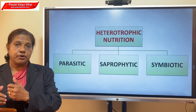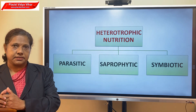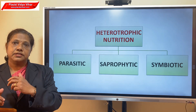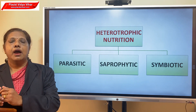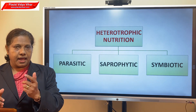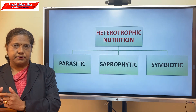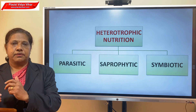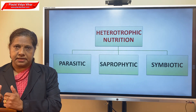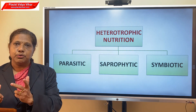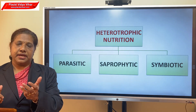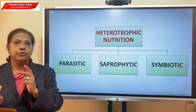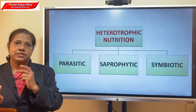Parasites are small animals or plants that live on or inside the body of other organisms. For example, lice that live in our hair, bed bugs, mosquitoes, leeches, and worms like roundworms and tapeworms that live in our intestines — these are all different types of parasites. These parasites do harm to our body; they suck our blood and take nutrients from it, harming the host organism.